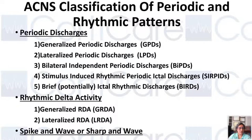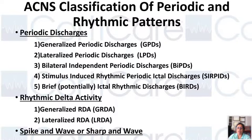There are some periodic discharges: generalized, bilateral independent, stimulus-induced, and brief ictal rhythmic discharges. There is rhythmic delta activity, which is classified into generalized and lateralized. And then, of course, spike and wave or sharp and wave patterns.